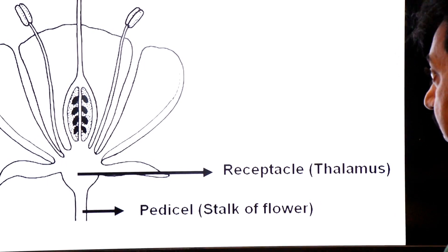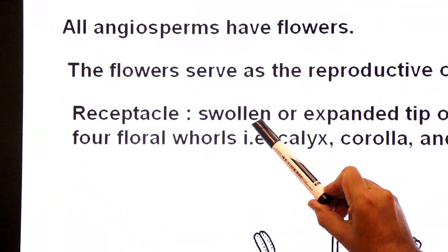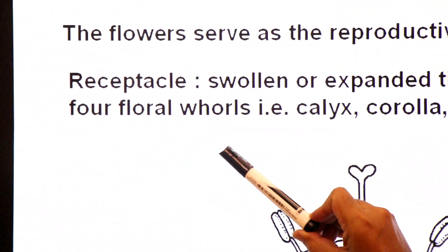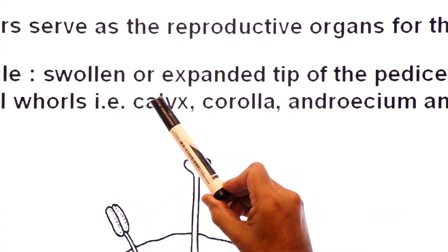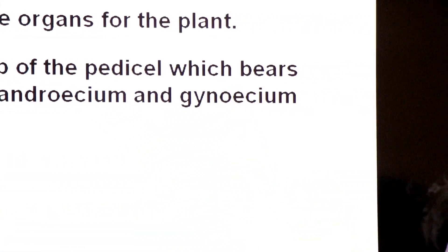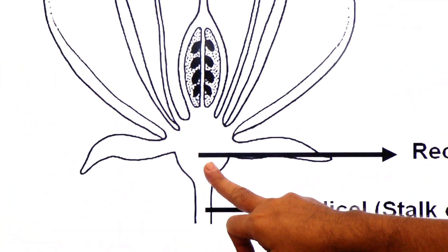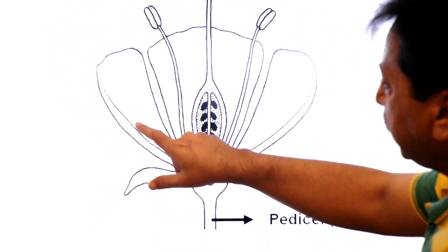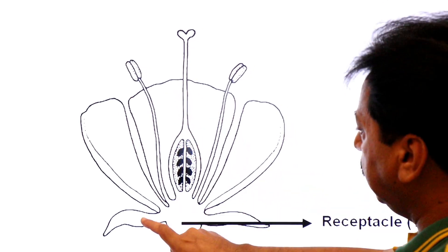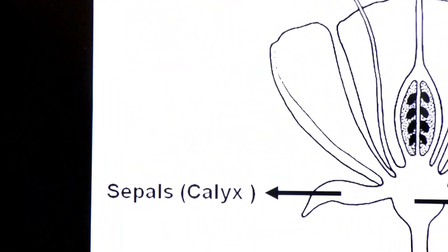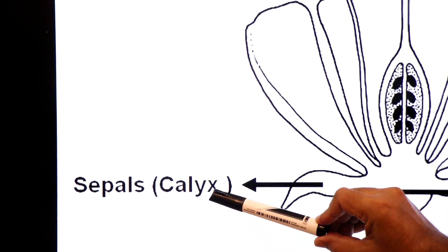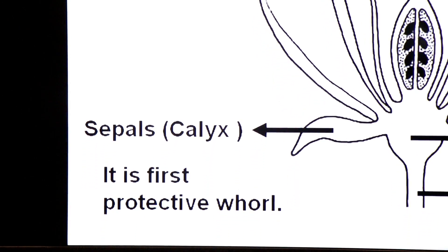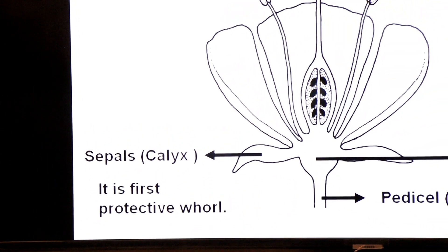The receptacle bears four floral whorls: calyx, corolla, androecium and gynoecium. The first whorl is calyx, made up of sepals - green leaves that form the first protective whorl, protecting the inner parts of the flower. The second whorl is corolla, made up of petals. Corolla is the second attractive whorl; it attracts insects for the purpose of pollination.